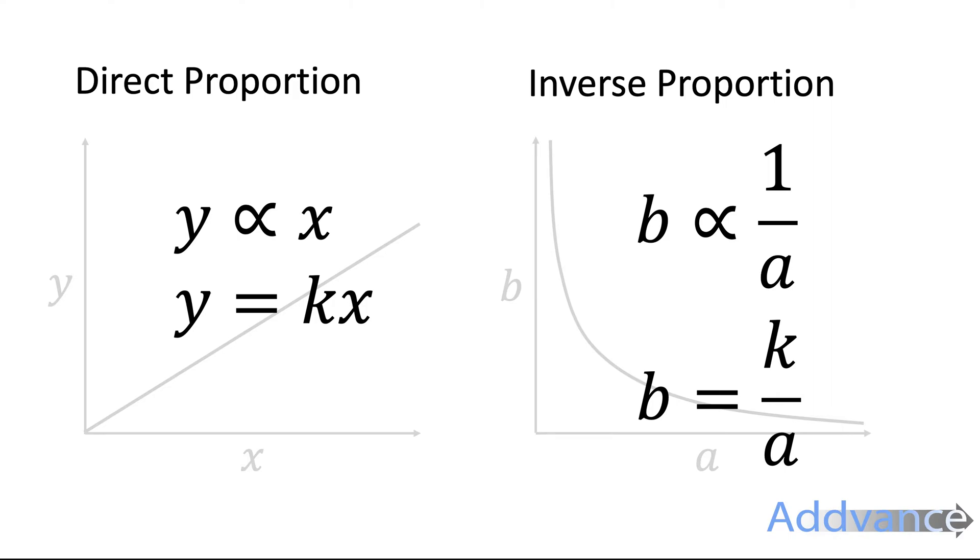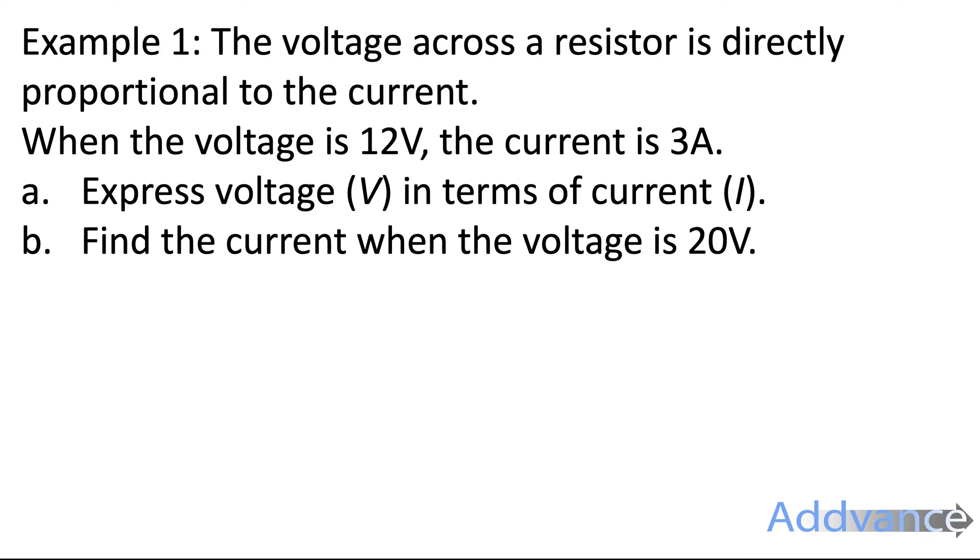Example 1. The voltage across a resistor is directly proportional to the current. When the voltage is 12V, the current is 3A. Express the voltage (V) in terms of the current (I).